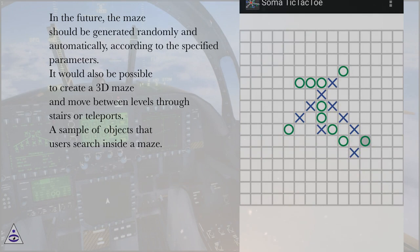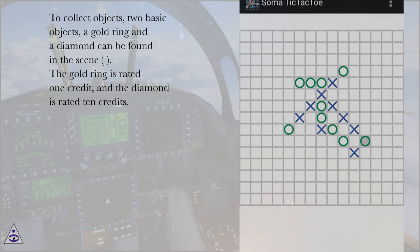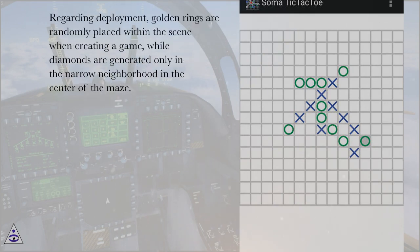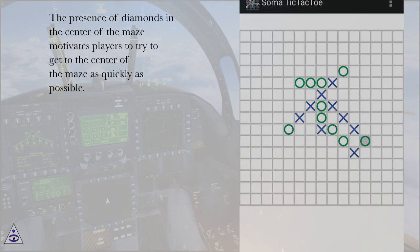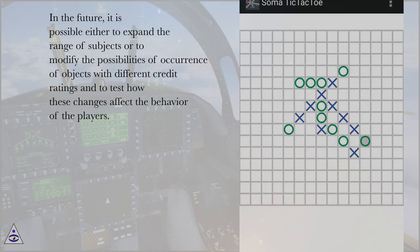A sample of objects that users search inside a maze. To collect objects, two basic objects, a gold ring and a diamond can be found in the scene. The gold ring is rated 1 credit, and the diamond is rated 10 credits. Regarding deployment, golden rings are randomly placed within the scene when creating a game, while diamonds are generated only in the narrow neighborhood in the center of the maze. The presence of diamonds in the center of the maze motivates players to try to get to the center of the maze as quickly as possible. In the future, it is possible either to expand the range of subjects or to modify the possibilities of occurrence of objects with different credit ratings and to test how these changes affect the behavior of the players.